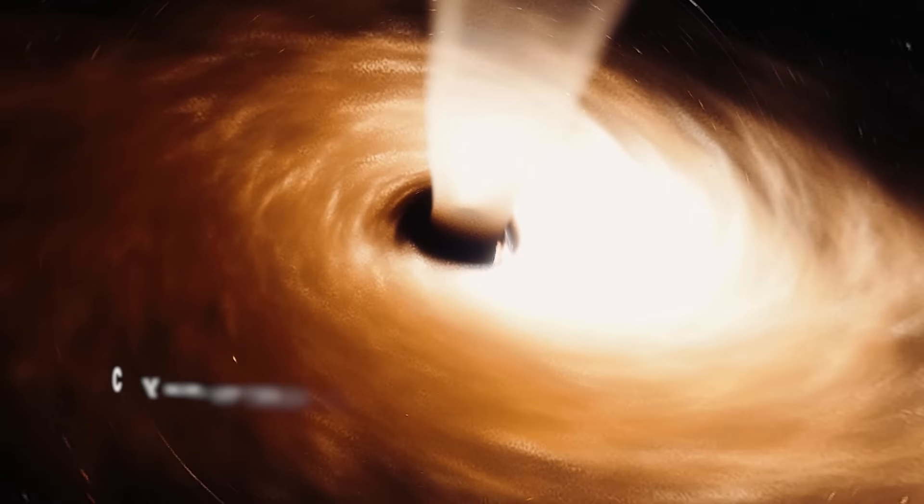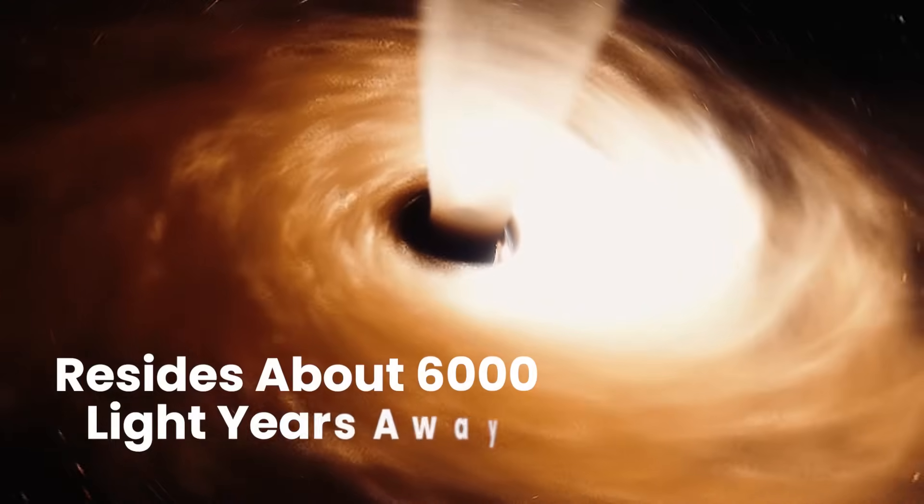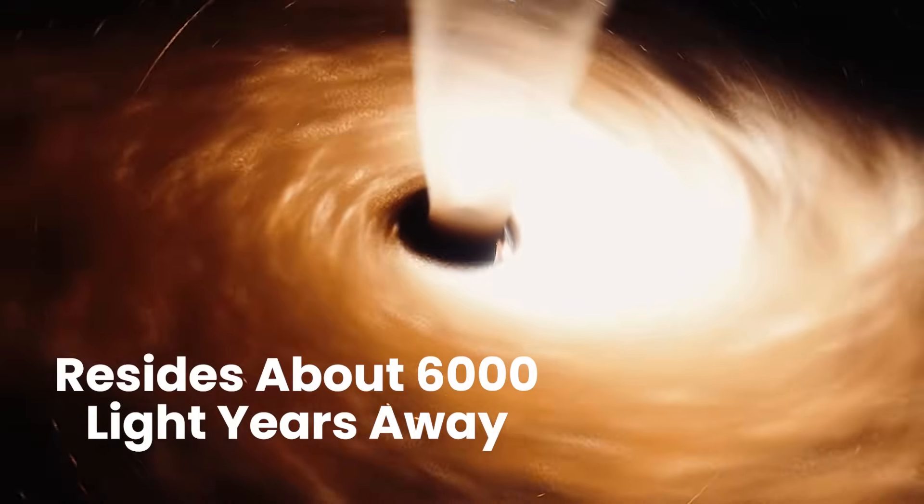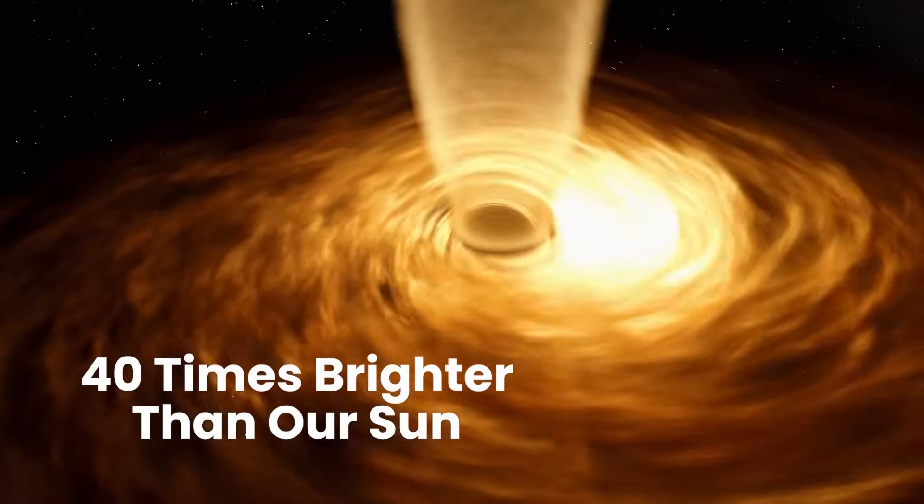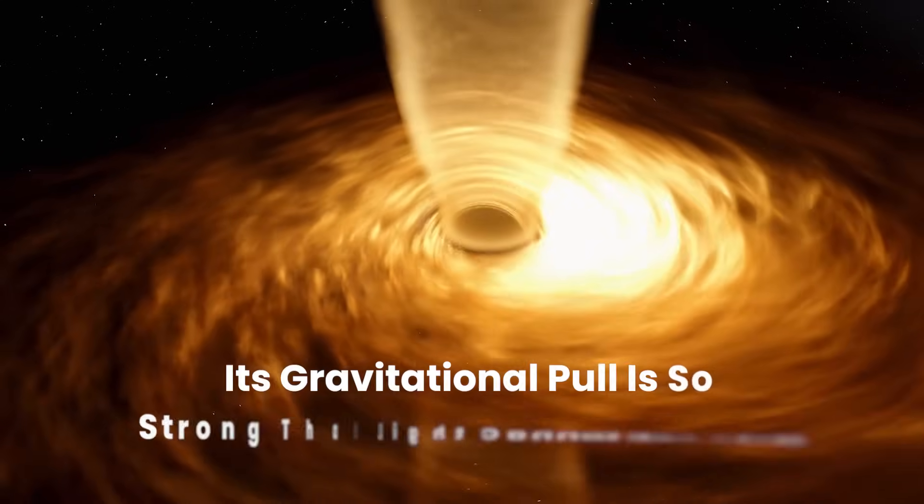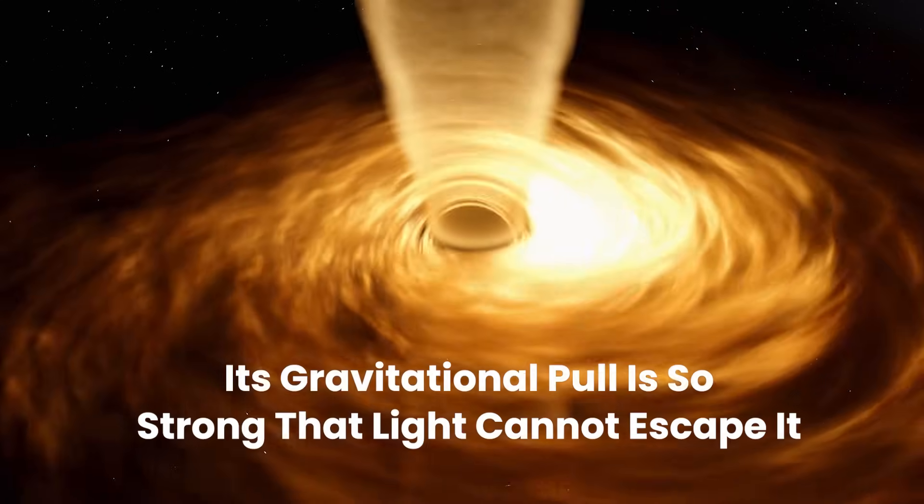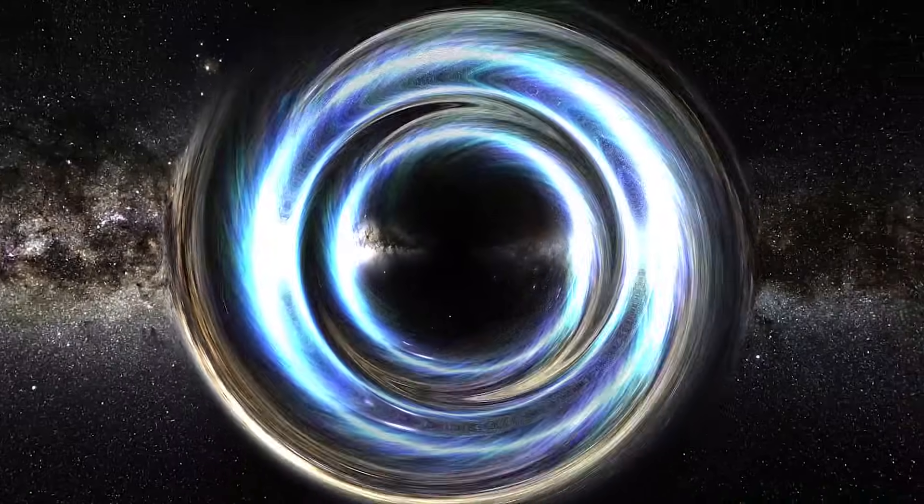This first black hole, named Cygnus X-1, resides about 6,000 light years away in the Cygnus constellation. It's a cosmic powerhouse, shining 14 times brighter than our sun, with an insatiable gravitational pull so strong that even light cannot escape it. Hence, the name black hole.